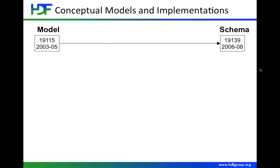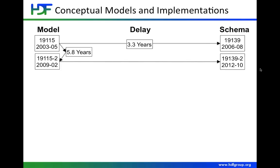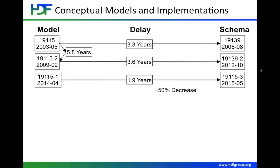One of the interesting things about how ISO has worked in the past is that for each model there has been a particular XML schema. For 19115, there was a schema in a standard called 19139, and the delay in creating that implementation was 3.3 years. 19115-2 for imagery was 5.8 years after 19115, then 3.6 more years before the XML implementation. We now have the revision, which became a standard in April, with a scheduled release of the schema next May.